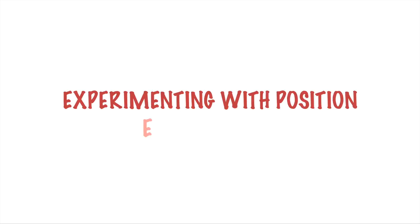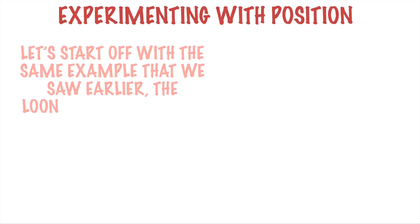In this example we are going to experiment with position. Position is a way to specify where you want a certain element to be, and there are a number of different values for the position attribute that CSS allows us to specify. Example 17 will focus on using the position attribute correctly to achieve the look and feel that we are interested in. We'll start with the same example that we saw earlier, as many of our examples build on top of those.